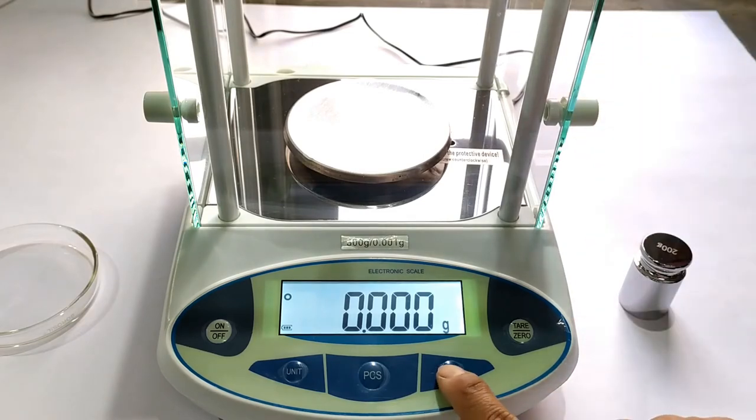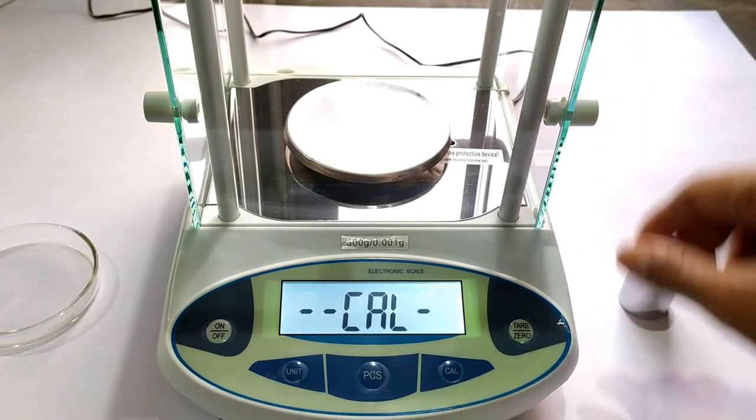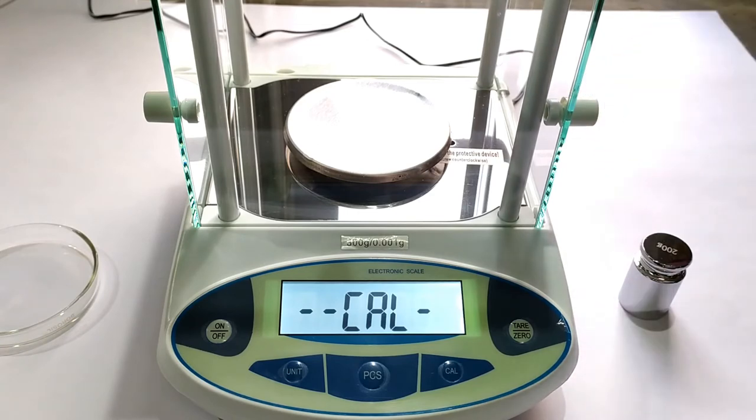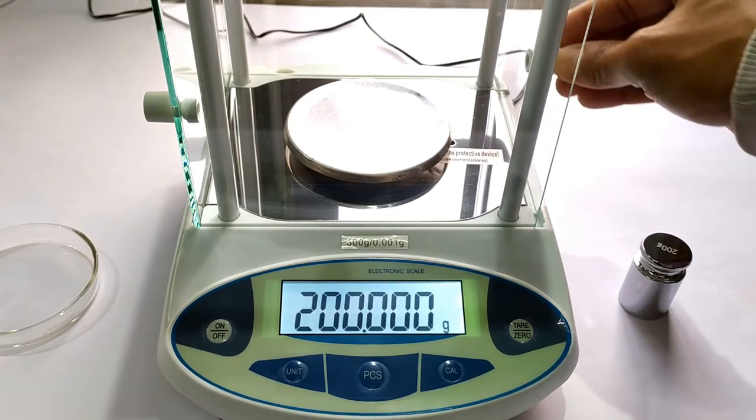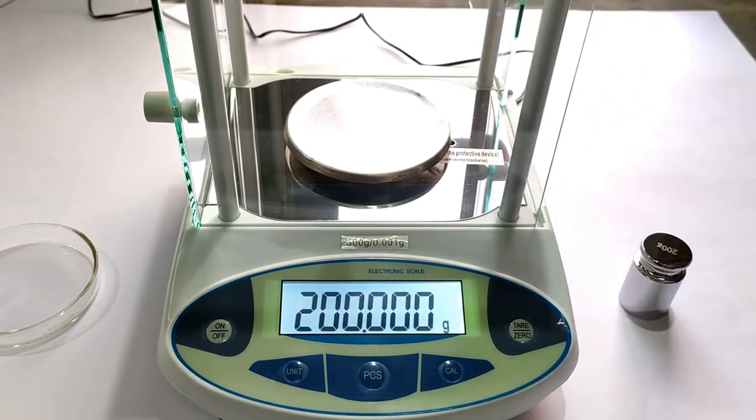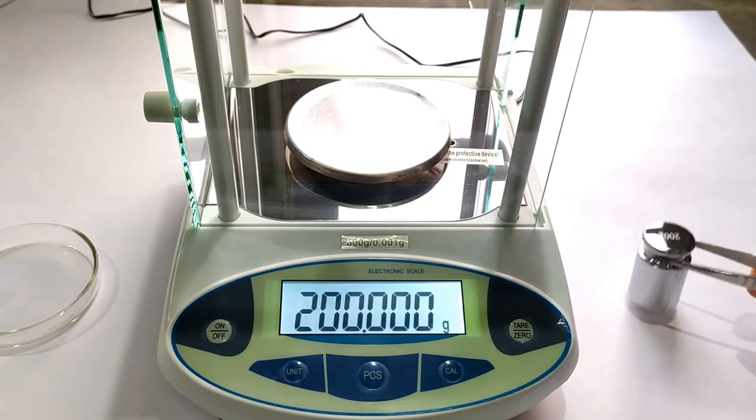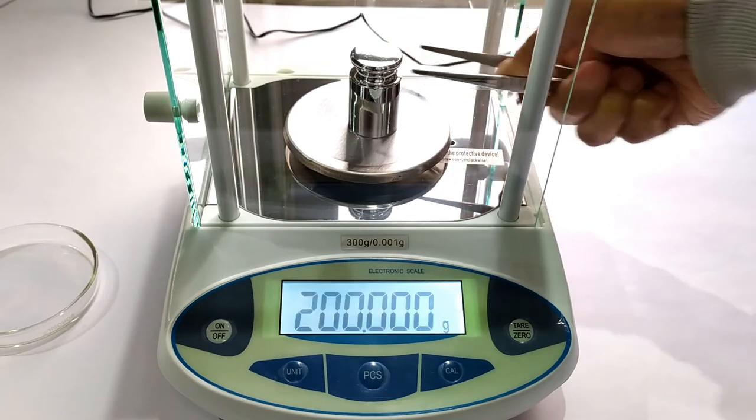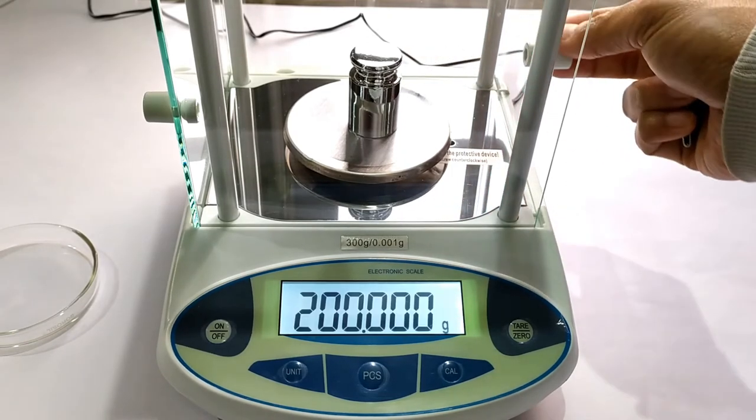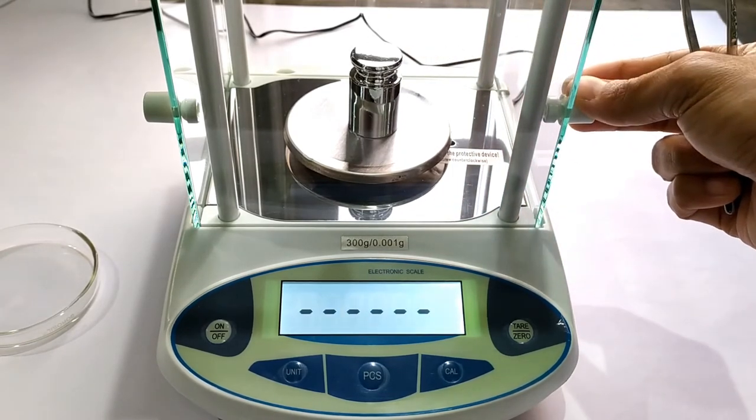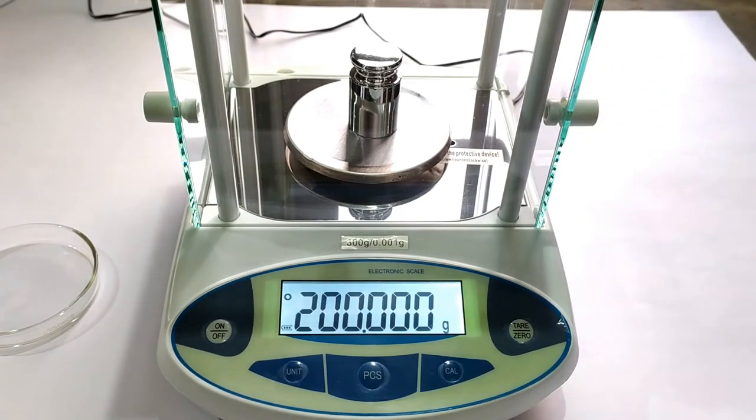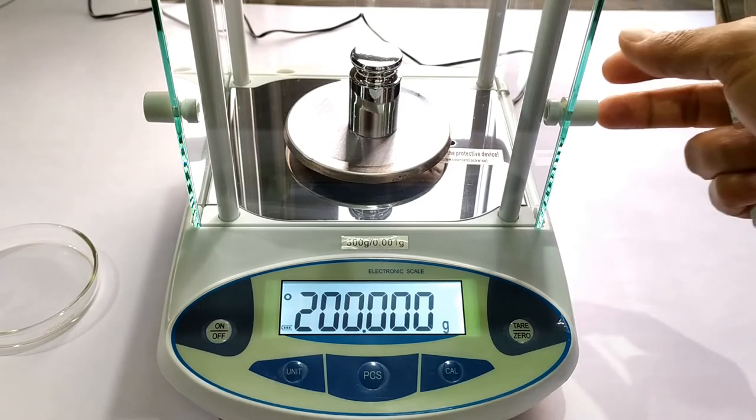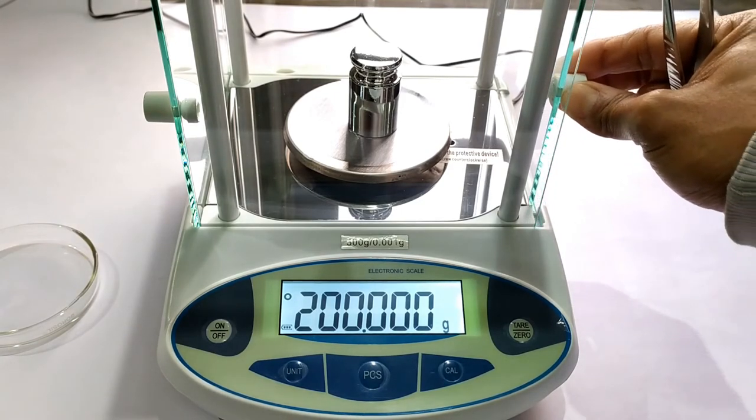And when 200g blinks on the screen, we place the 200g standard calibration weight onto the weighing pan. The screen eventually stops blinking and if it remains at 200g that means the device has been calibrated. We now remove the weight.